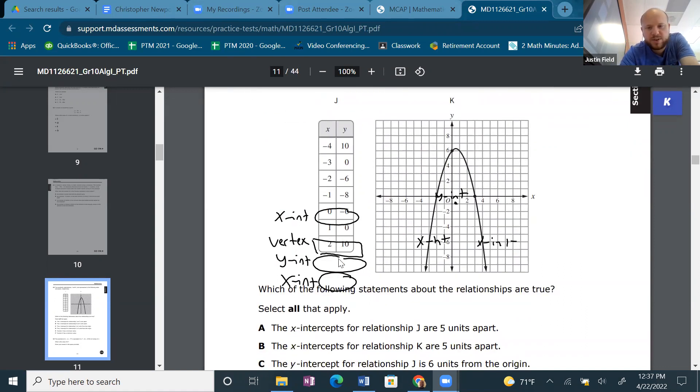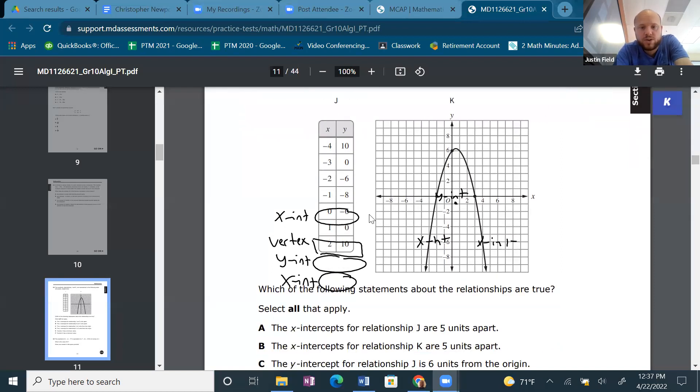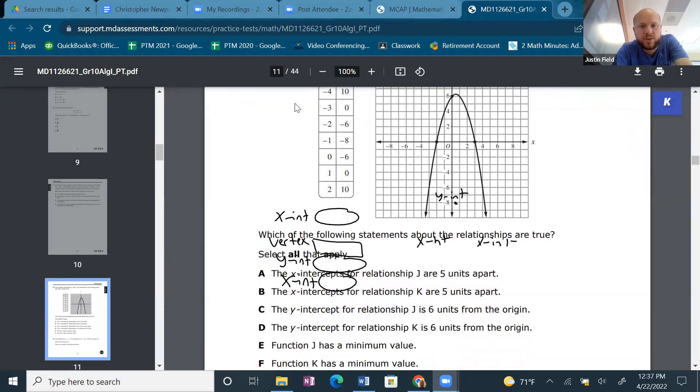So A is not true. The x-intercepts for K are 5 units apart. -1, 1, 2, 3, 4. That's true. Okay, so B is, let's write it down. B is true.